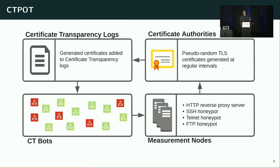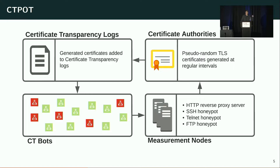To answer these questions, we created a honeypot system that we call CTpot. Starting from the bottom right and moving counterclockwise, it's a series of measurement nodes, each hosting an HTTP reverse proxy server that simply forwards all requests it receives to a centralized database node, along with an SSH, Telnet, and FTP honeypot. Periodically, each of these nodes registers certificates for pseudorandom domains using the Let's Encrypt API. When Let's Encrypt receives these requests, it logs the certificate creations to one or many certificate transparency logs, which are then ingested by malicious and benign bots, who send requests back to our measurement nodes. This cycle continues on and on.